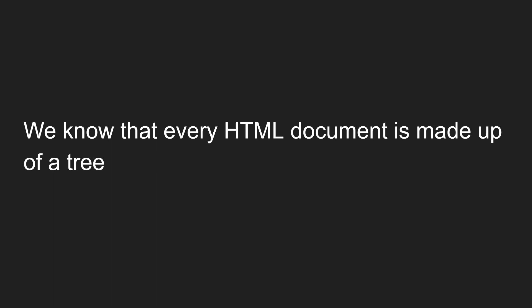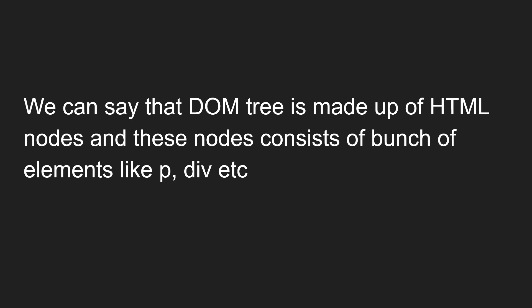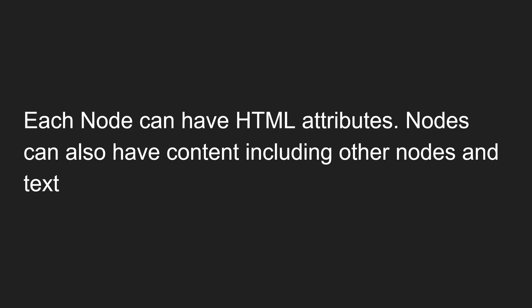Every HTML document is made up of a tree. The DOM tree is made up of HTML nodes, and these nodes consist of elements like paragraph, div, image, html, and head — these are all called nodes. Each node can have HTML attributes. Node type 1 is an element node, type 2 is an attribute node. Nodes can also have content including other nodes and text — for example, a div can contain other elements, which are inner nodes.